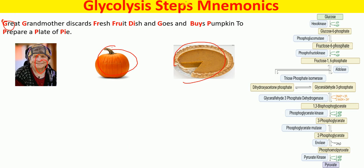G for glucose, grandmother G for glucose-6-phosphate, fresh FR for fructose-6-phosphate, fruit FR for fructose-1,6-bisphosphate, dish DI for dihydroxyacetone phosphate, goes G for glyceraldehyde-3-phosphate.